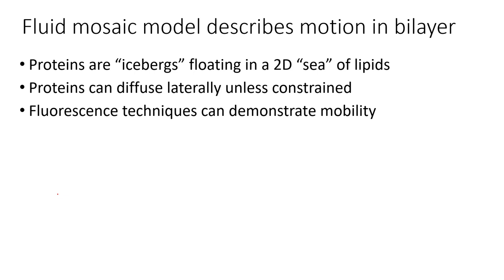Occasionally, in some membranes, proteins can be constrained on the membrane, but unless they are constrained, they're able to diffuse. We have a number of different lab techniques, most of them involving fluorescence, that can help us to demonstrate this mobility — this property of membrane proteins that we see for this fluid mosaic model.